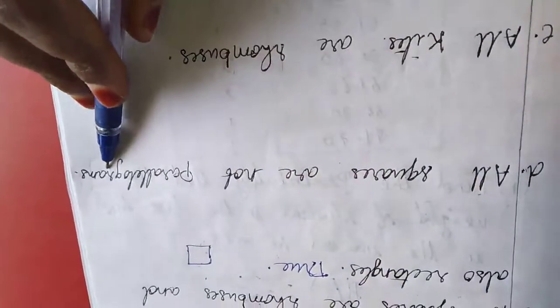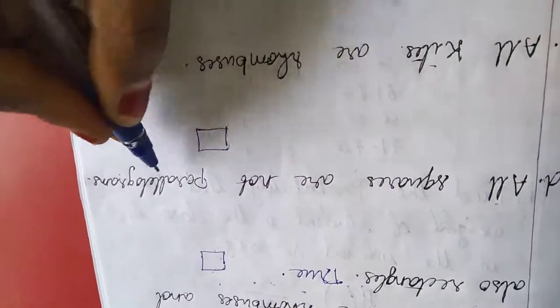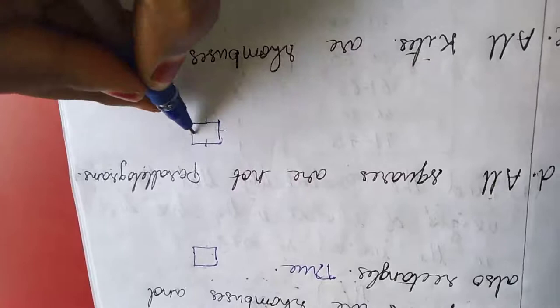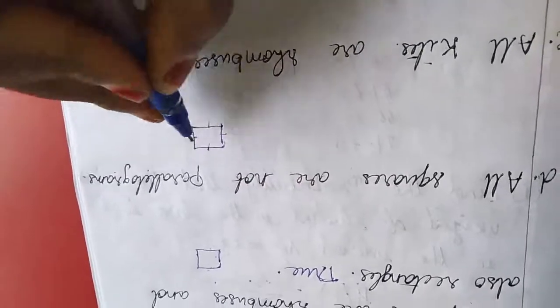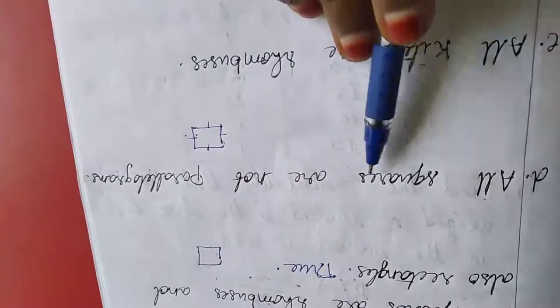Next one, all squares are not parallelograms. Squares are rhombuses with all sides equal, so parallelograms. All squares are parallelograms, so it is false.